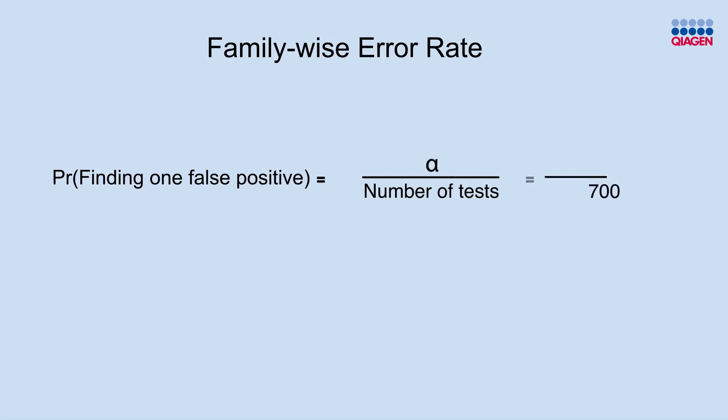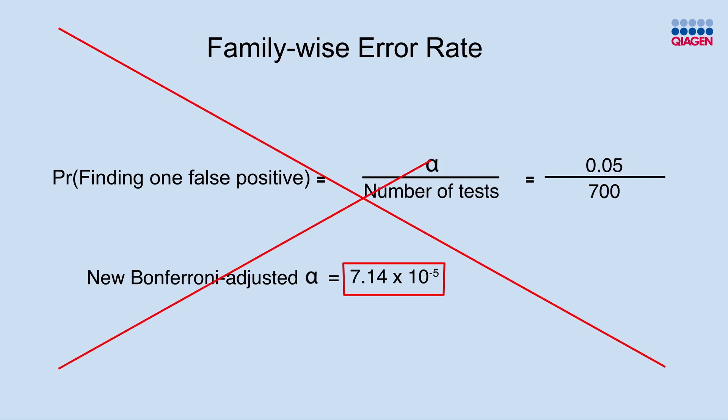For example, if you have 700 hypotheses you want to test, and use an alpha 0.05 as your significance threshold, your new Bonferroni adjusted alpha would be 7.14 times 10 to the minus 5. This method is not used in IPA. Why?